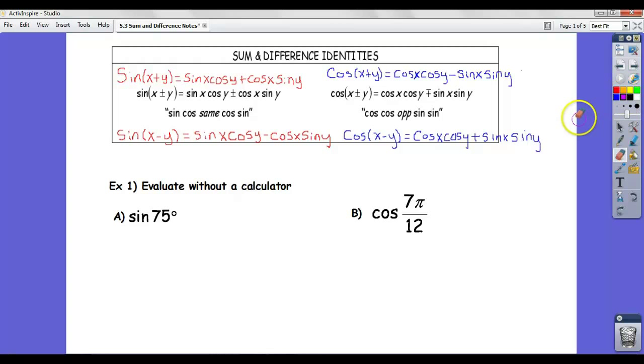Hello everyone, welcome. Today we're going to look at sum and difference identities, and these are formulas that are going to allow us to take the sine and cosine of the sum of two angles.